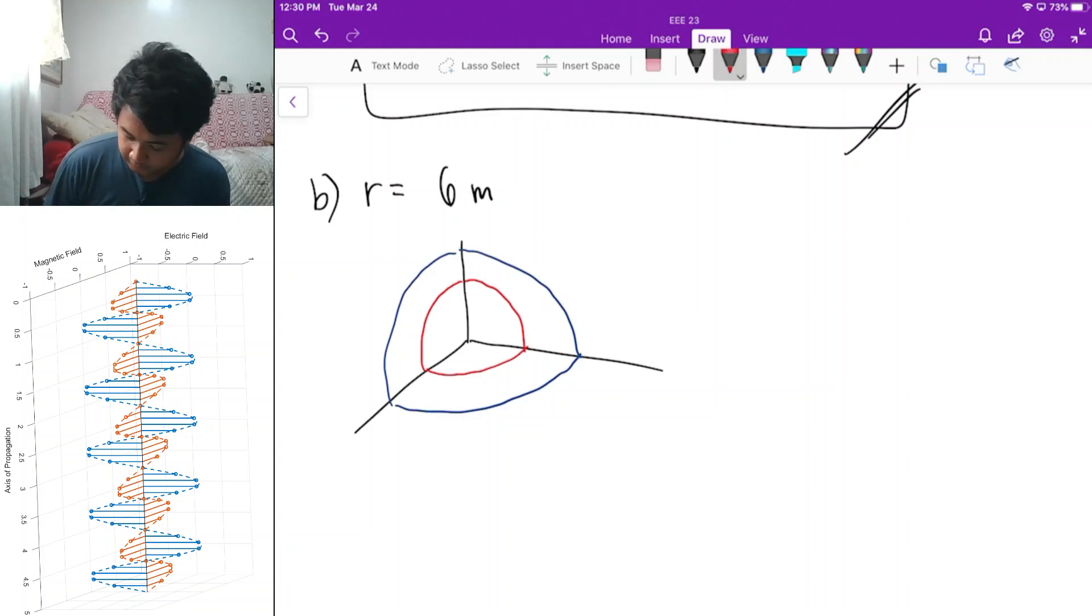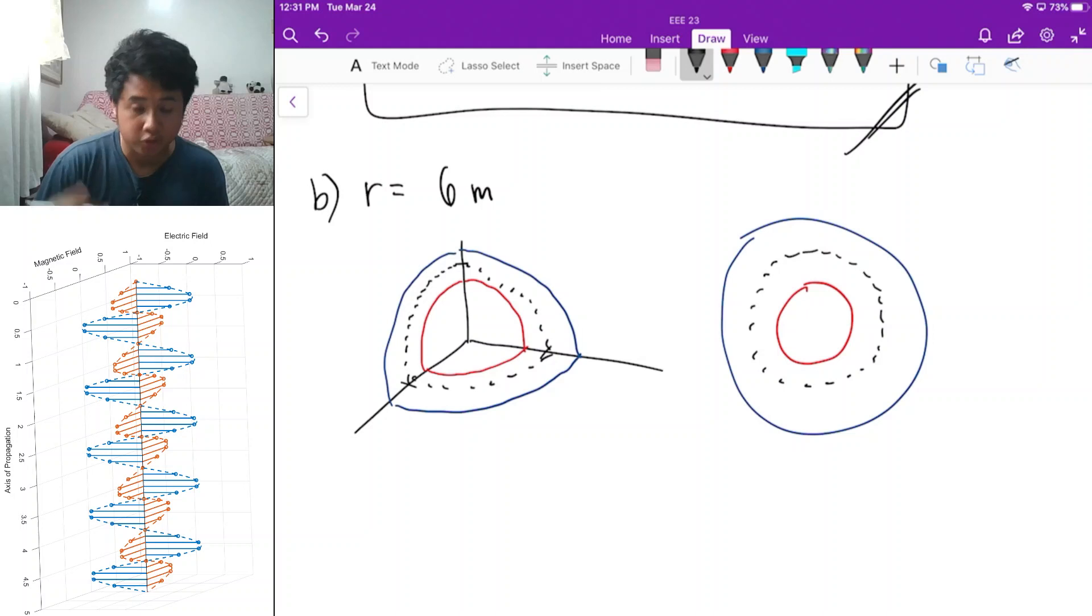This r is equal to 6 encloses a part of the second region and fully encloses the first region as you can see here. If you're going to look at it from the front view, it's going to look like this. This is your region inside, this is the region outside, and the surface is between the borders. The r is equal to 6 encloses the whole charge density inside and part of the charge density outside.